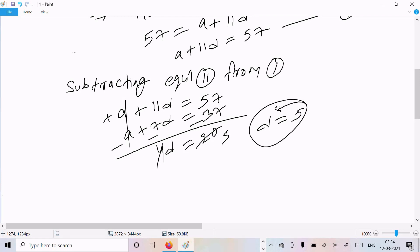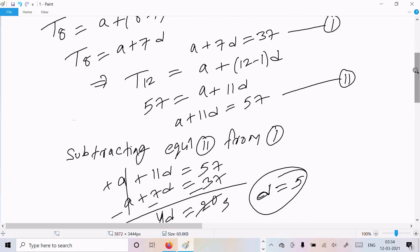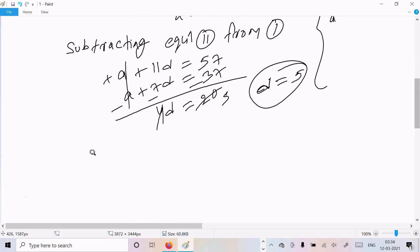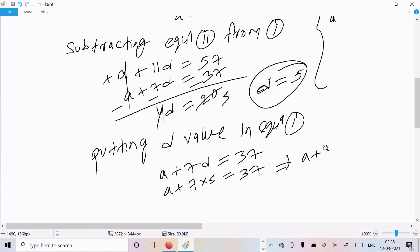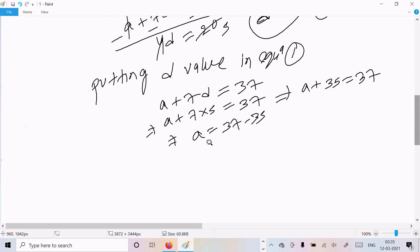Now d value is 5, so we're going to calculate the value of a. Putting d value in equation 1, a plus 7d equal to 37. So a plus 7 into 5 equal to 37. Or we can write a plus 35 equal to 37. Here a equal to 37 minus 35, so a value is 2.